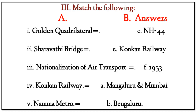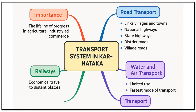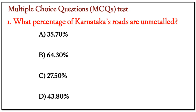Look at the mind map on Transport System in Karnataka covering: Road Transportation, Water and Air Transportation, Railways, and their importance. Next, we will take a few MCQ questions to help your comprehension.